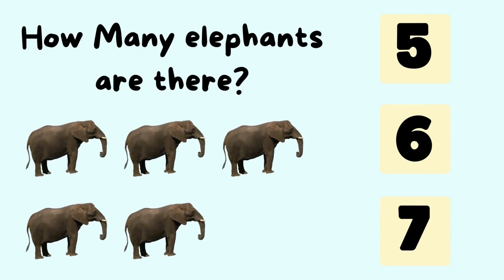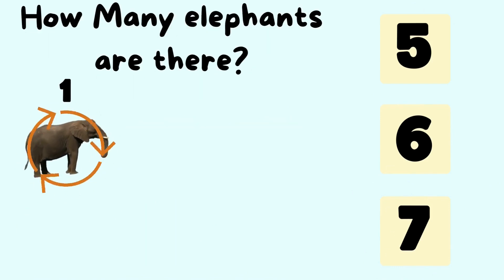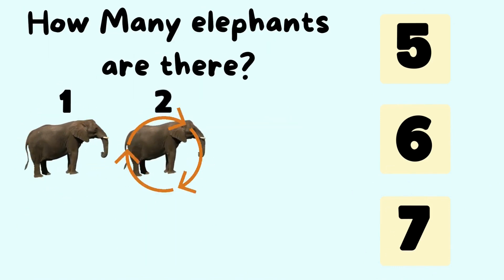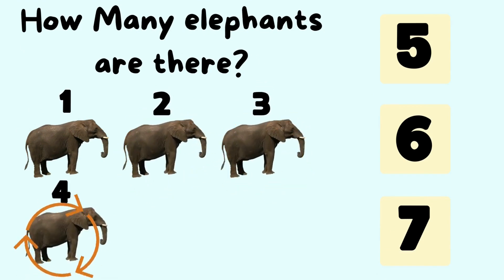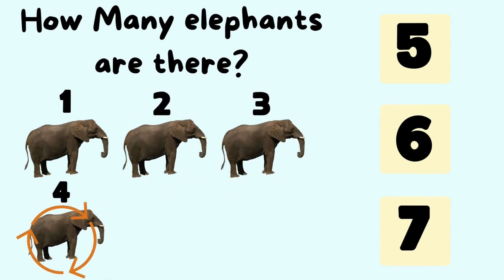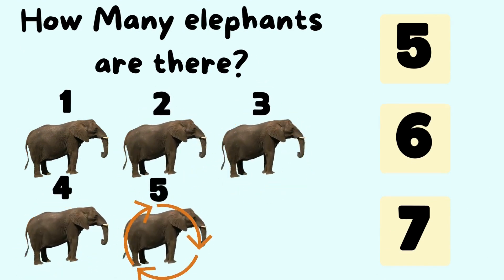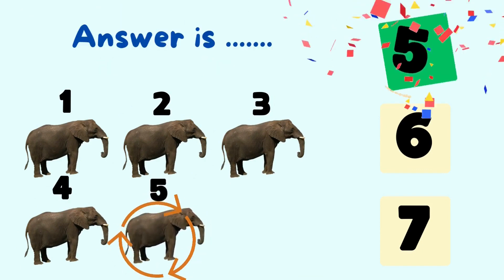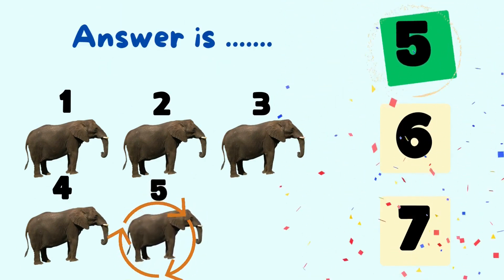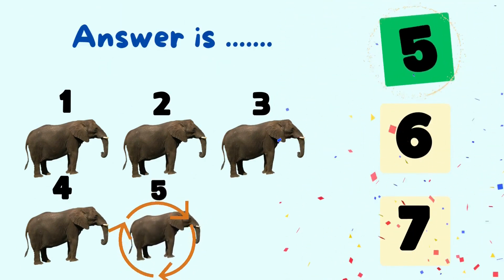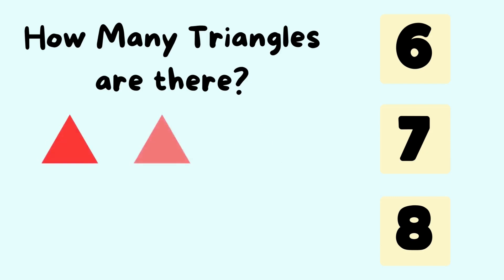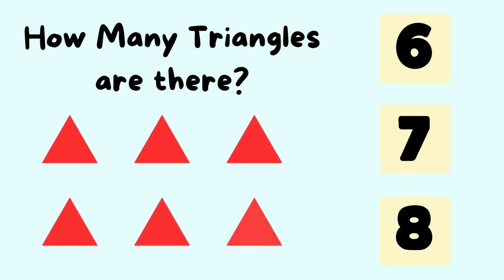How many elephants are there? Let's count the number of elephants. It is one, two, three, four, five elephants. So the answer is five elephants.